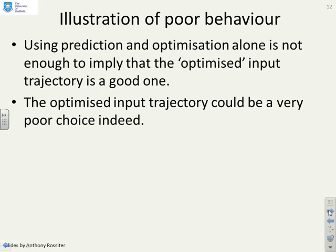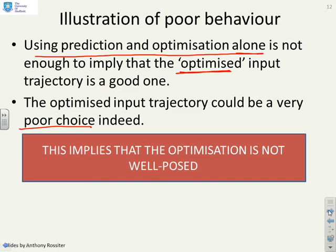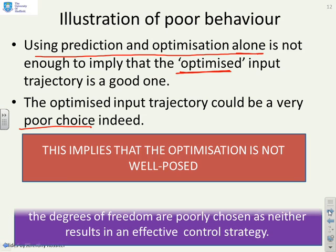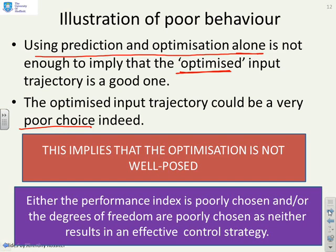What does that tell us? Using prediction and optimization alone is not enough to imply that the optimized input trajectory is a good one. The optimized input trajectory could actually be a very poor choice. And in this case, if you do the example and look at them, you can say, well I can see that the optimization was not well-posed. Do I understand why? Not yet, but I know that it wasn't well-posed. And so either the performance index is poorly chosen and/or the degrees of freedom are poorly chosen as the combination of these has not resulted in an effective strategy.